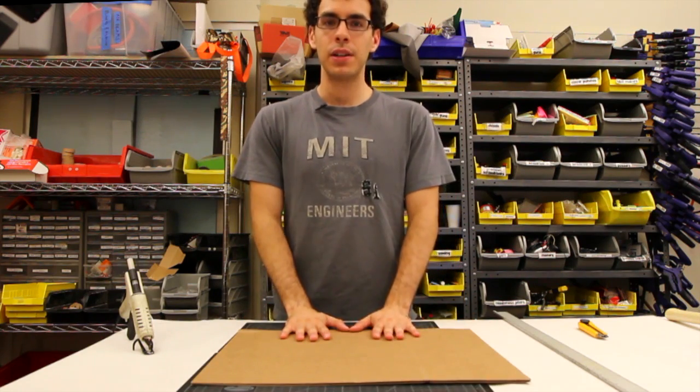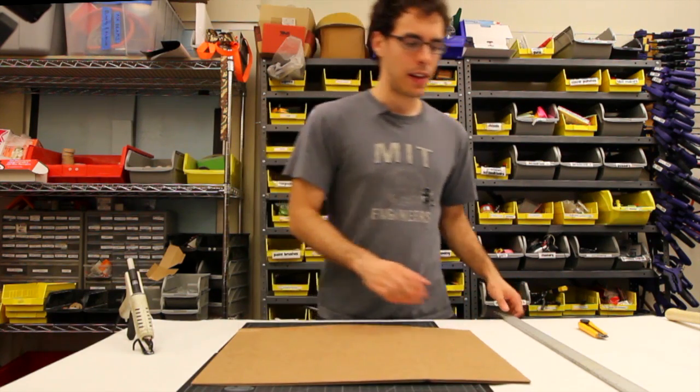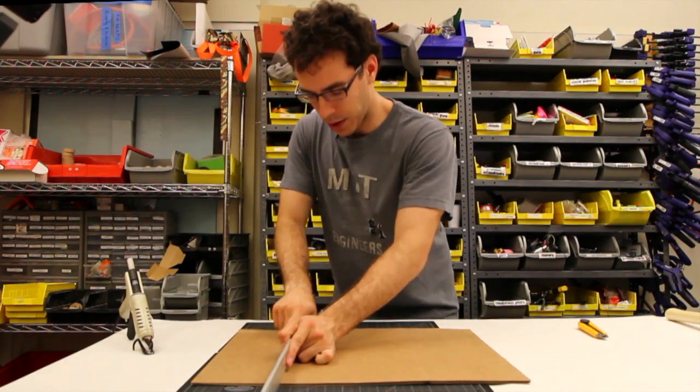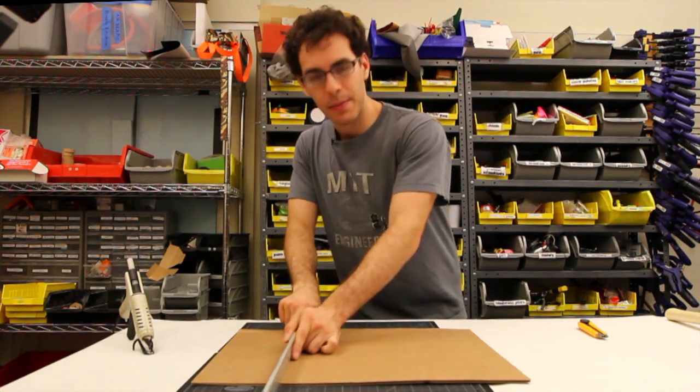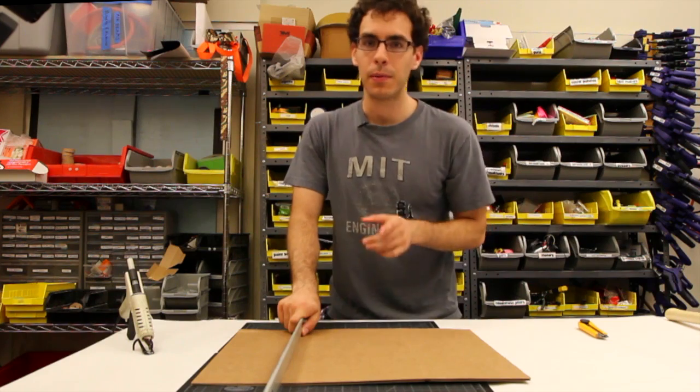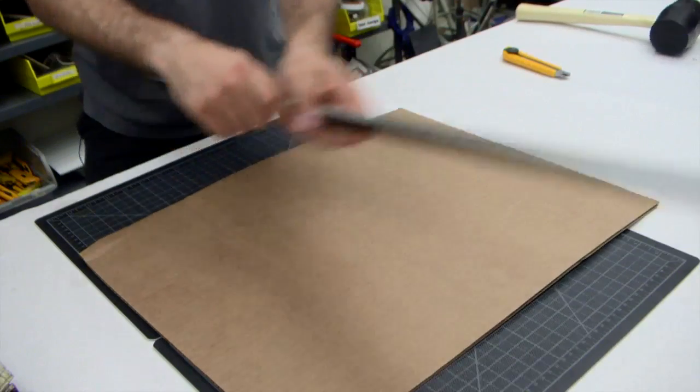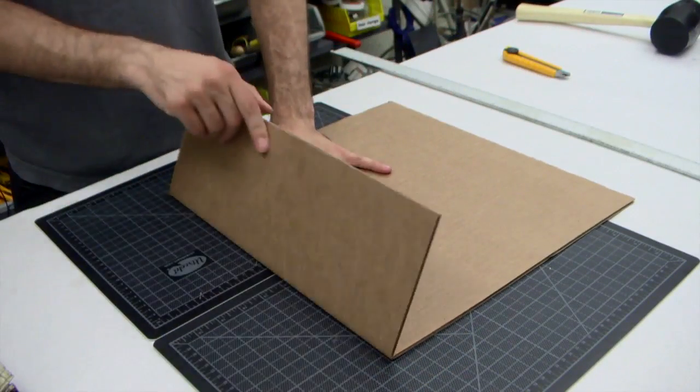Now the first thing that we're going to do is bend the cardboard, and for that we're going to use a straight edge. You use the straight edge to make a dent in the cardboard, but if it's too hard to make a dent, it helps to have a rubber mallet handy. So with just a whack, you've got a nice clean bend.